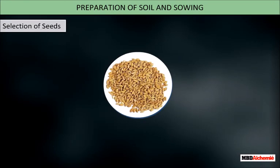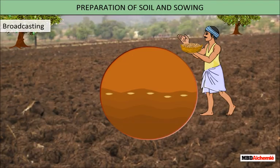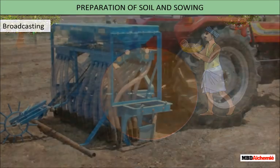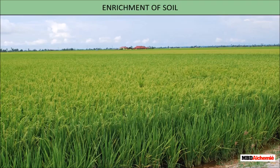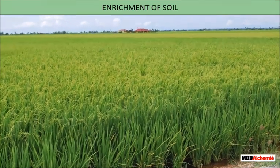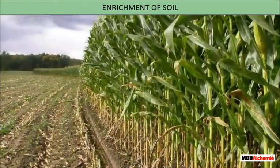Selection of seeds involves precaution, as the seeds should be healthy and disease-free. Seeds should be sown at the right depth and at a distance from each other. Sowing of seeds manually is known as broadcasting. They are also sown using a seed drill.